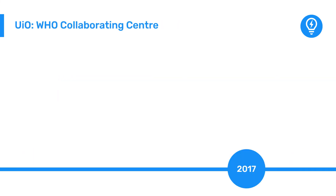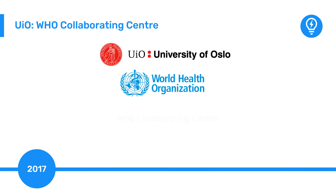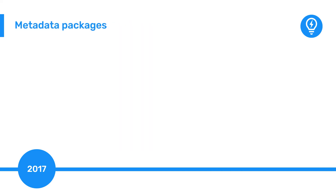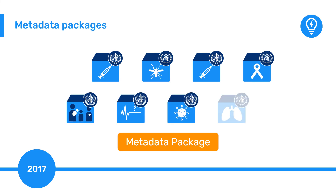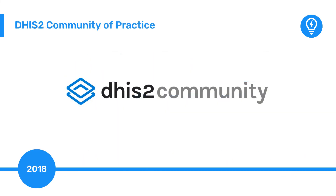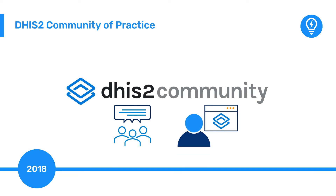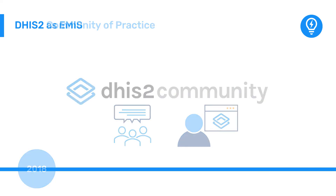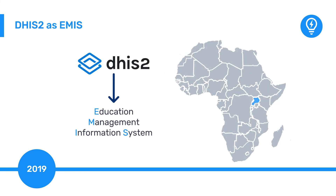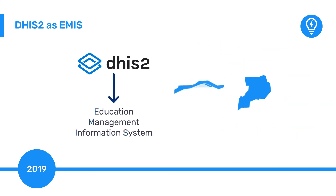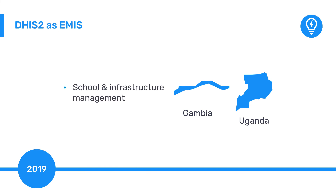In 2017, UIO became an official World Health Organization collaborating center for innovation and implementation research for health information systems strengthening. This collaboration led to the metadata package concept, a method of sharing best practice configuration and functionality developed by DHIS-2 and health subject matter experts. 2018 saw the DHIS-2 community of practice launch, providing an online portal to help the community of DHIS-2 practitioners to connect with each other and share best practice globally. 2019 saw DHIS-2 being piloted as an education management information system in the Gambia and Uganda, extending the use of DHIS-2 into the education domain for school and infrastructure management, student tracking, and more.